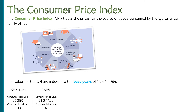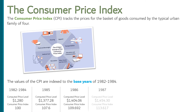Then in 1985, they check the same prices again. And if they found the numbers added up to $1,377.28, they would again divide by the base year number of 1,280 and multiply by 100, so the CPI this time would be 107.6. Then they do it again in 1986, normalizing the values to those base years. The upside of doing things this way is that the CPI value reported is a lot easier to work with and interpret. I can tell by just looking that prices in 1987 were 13.617% higher than they were in the base years.